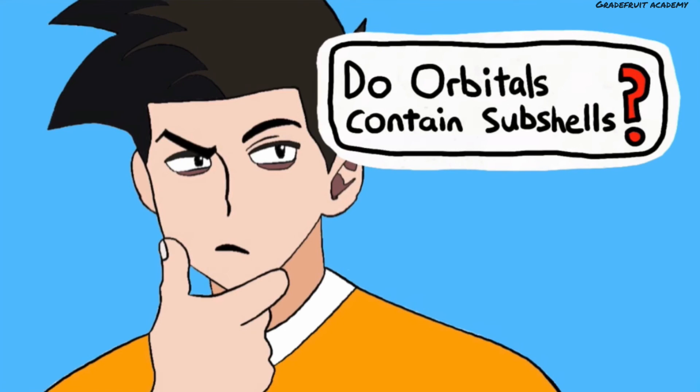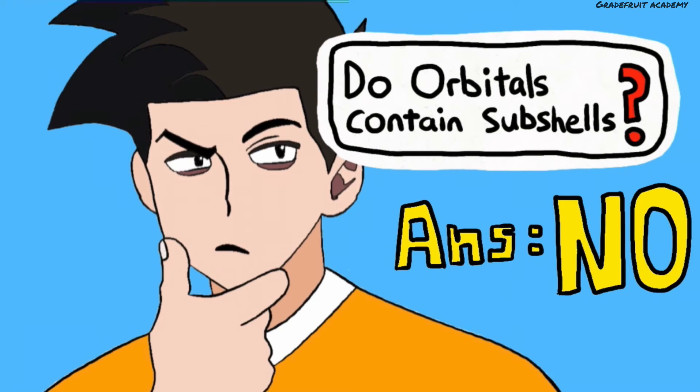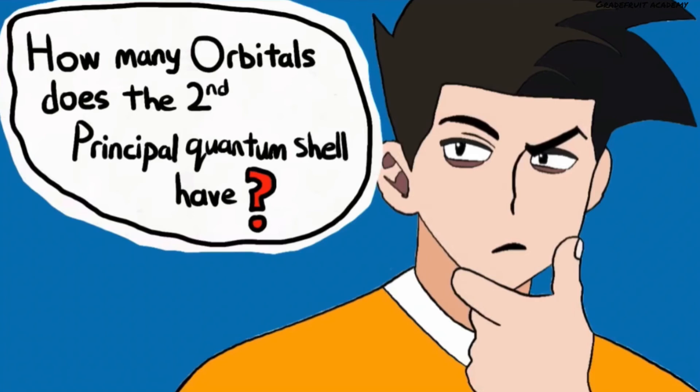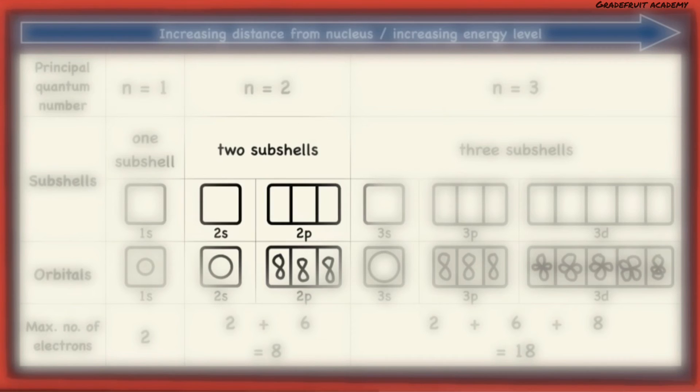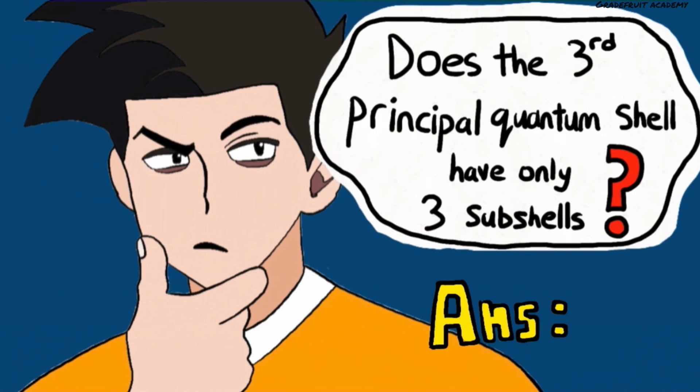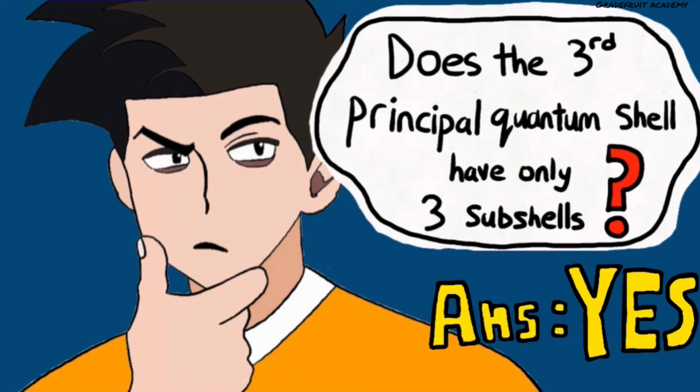So, do orbitals contain subshells? The answer is no, and it is the other way around where subshells contain orbitals instead. For the second question, the second principal quantum shell will have 1 plus 3, which is 4 orbitals. And lastly, yes, the third principal quantum shell has only 3 subshells.